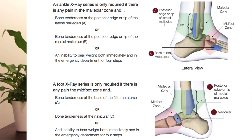They also want you to palpate the entire distal six centimeters of the distal tibia and fibula — this is to assess for high ankle sprains or syndesmotic injury. That's the Ottawa ankle rules. Several studies have found that it is very sensitive, which is great in terms of ruling out fractures.